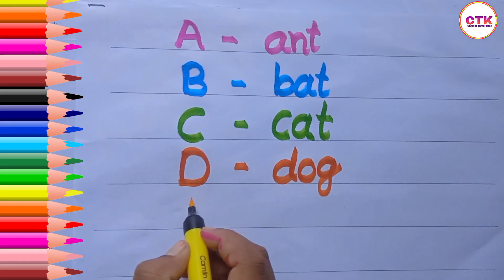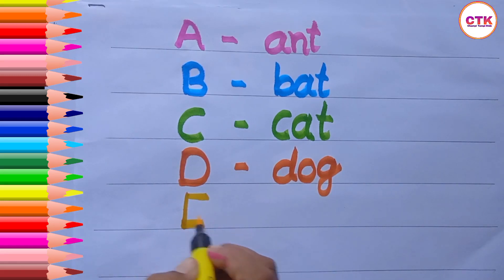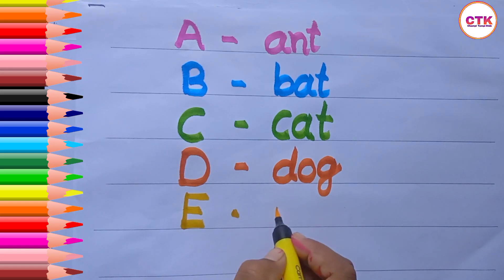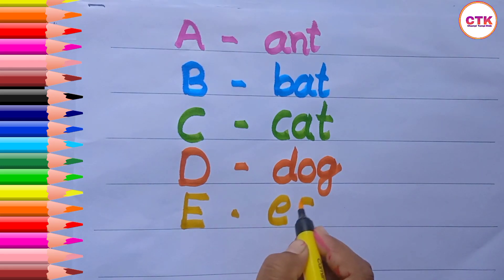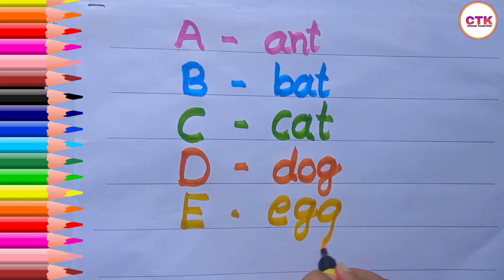This is yellow color. E. E for egg. E, double G — egg.